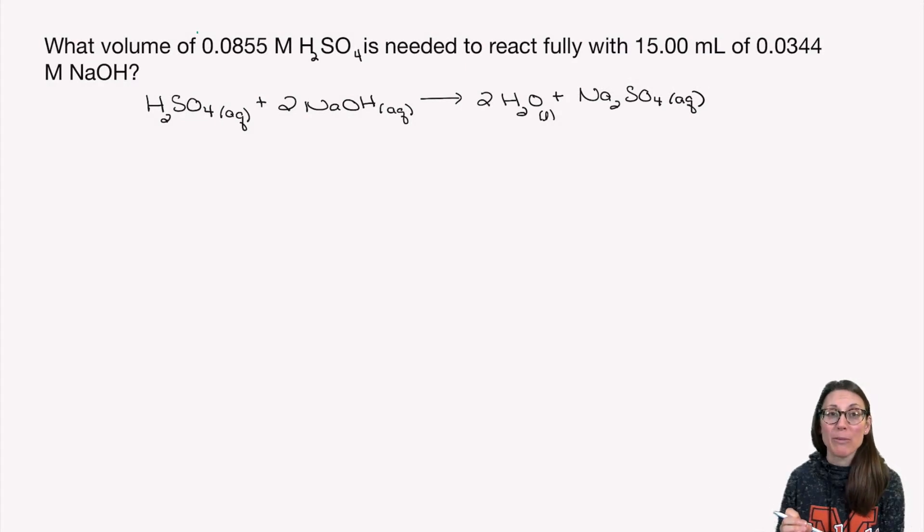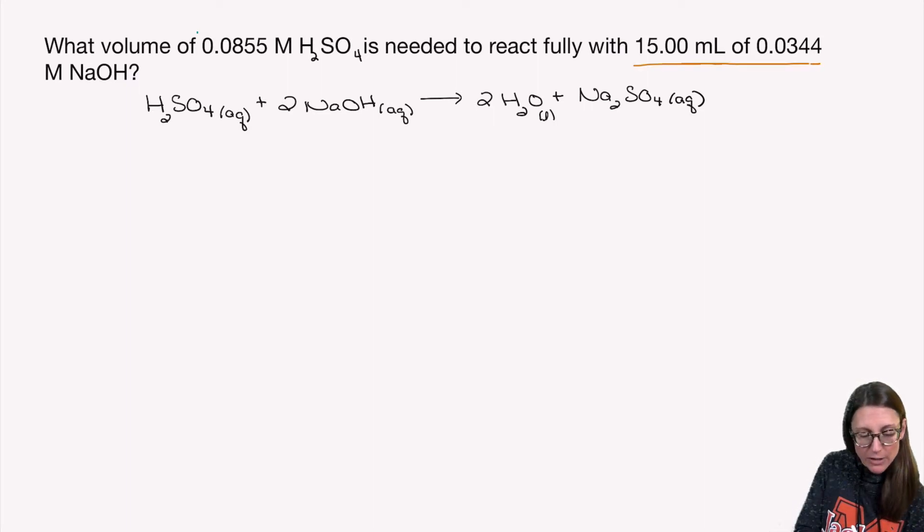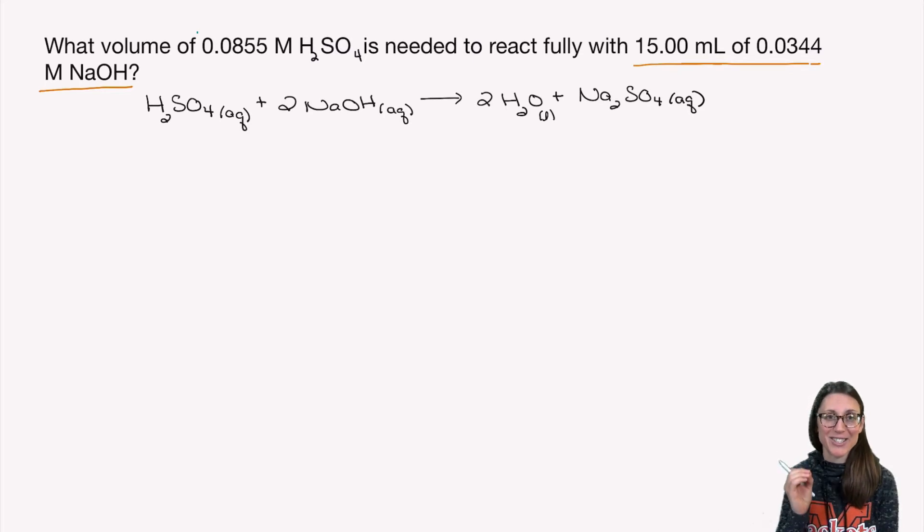Let's take a look at two problems. The first one: what volume of 0.855 molar H2SO4, that's sulfuric acid, as an aqueous solution, is needed to fully react with 15 milliliters of 0.0344 molar sodium hydroxide? As with so many of our stoichiometry problems, we need to know where to start. In this case, the chemical that we will be starting with is the one we know both a concentration and a volume for. So in this case, that is 15 milliliters of 0.0344 molar sodium hydroxide. That's our starting point.